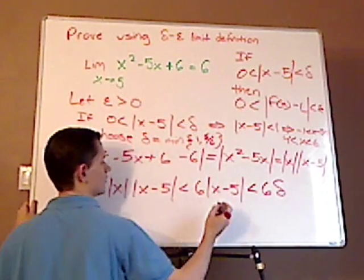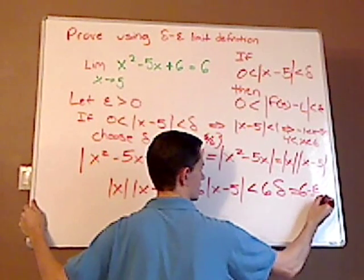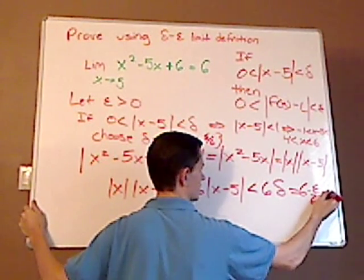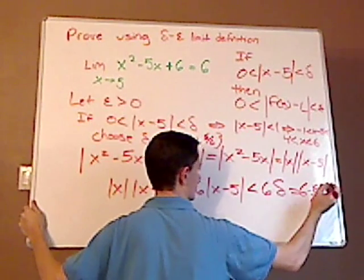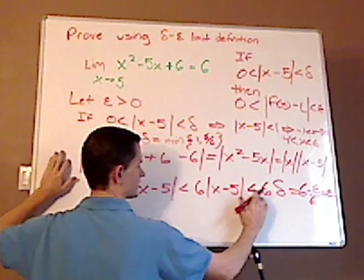that's going to equal 6 times epsilon over 6, which equals epsilon. So, I just proved this is less than this.